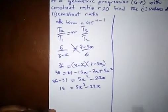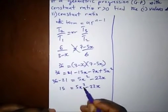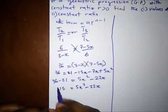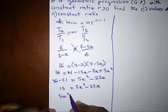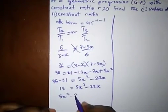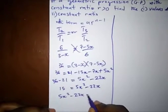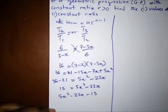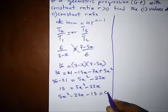Bringing everything to one side of the equation, we have 5x squared minus 22x minus 15 equal to 0.